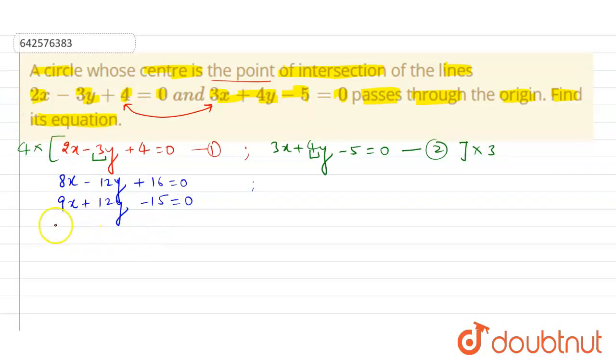My dear students, if I use elimination method, then you can see -12y and +12y will be cancelled. And you are left with 17x + 1 = 0, which provides the value of x as -1/17.